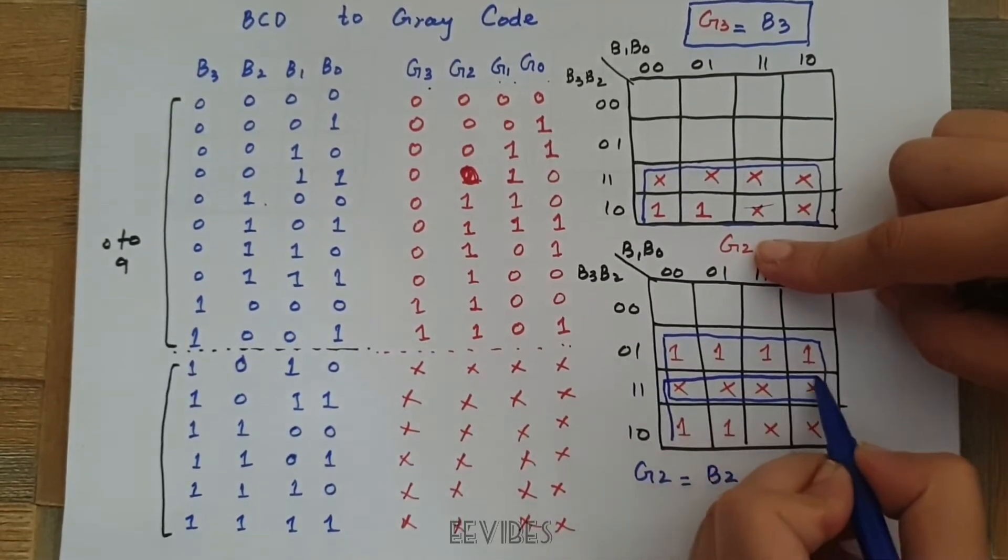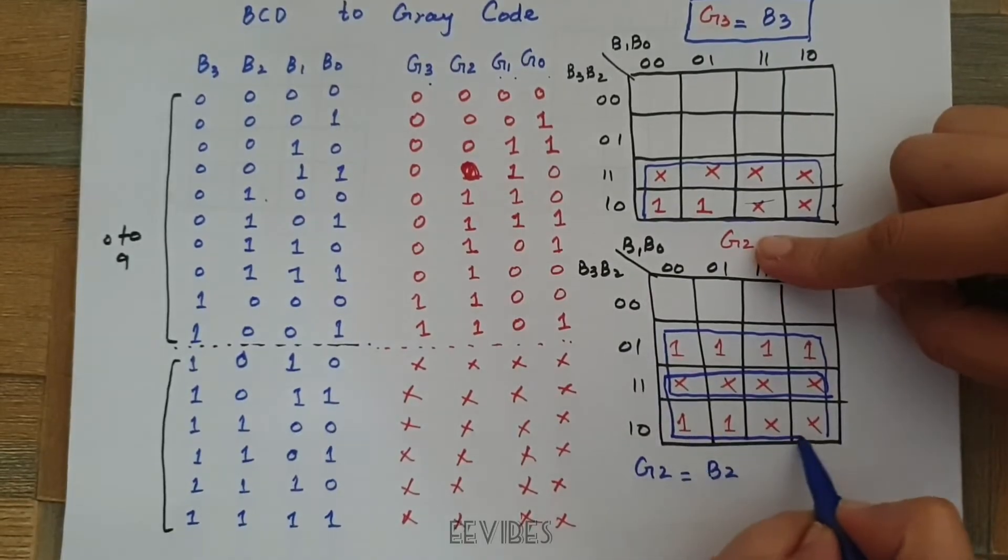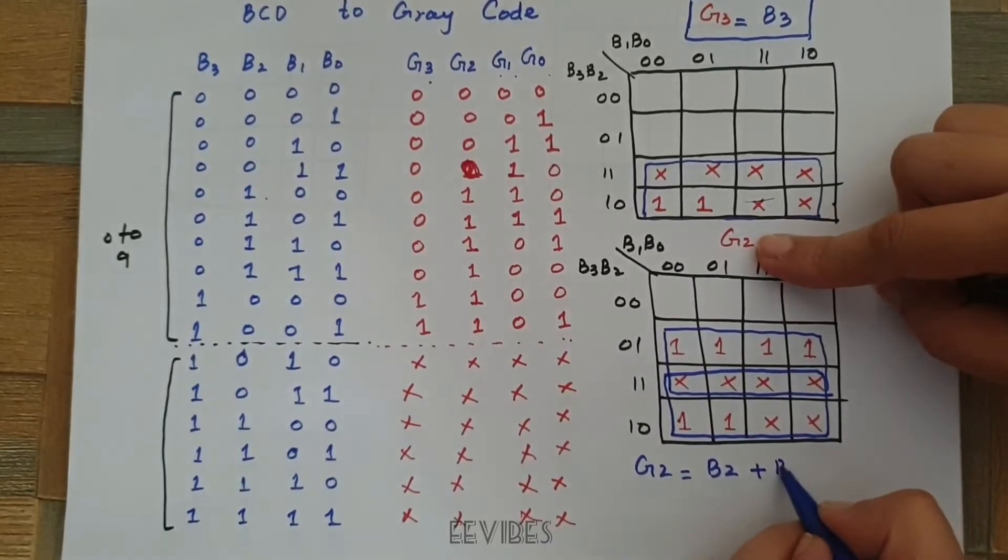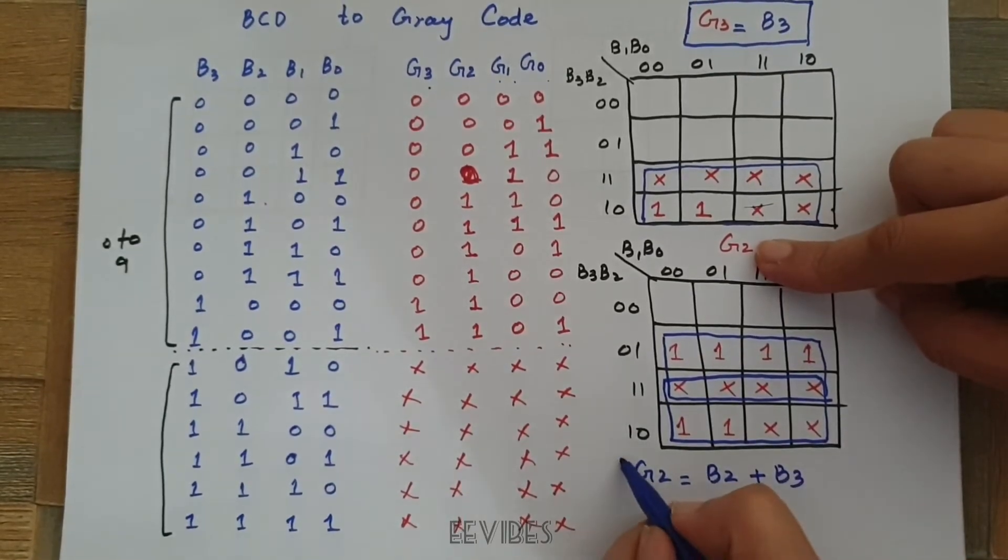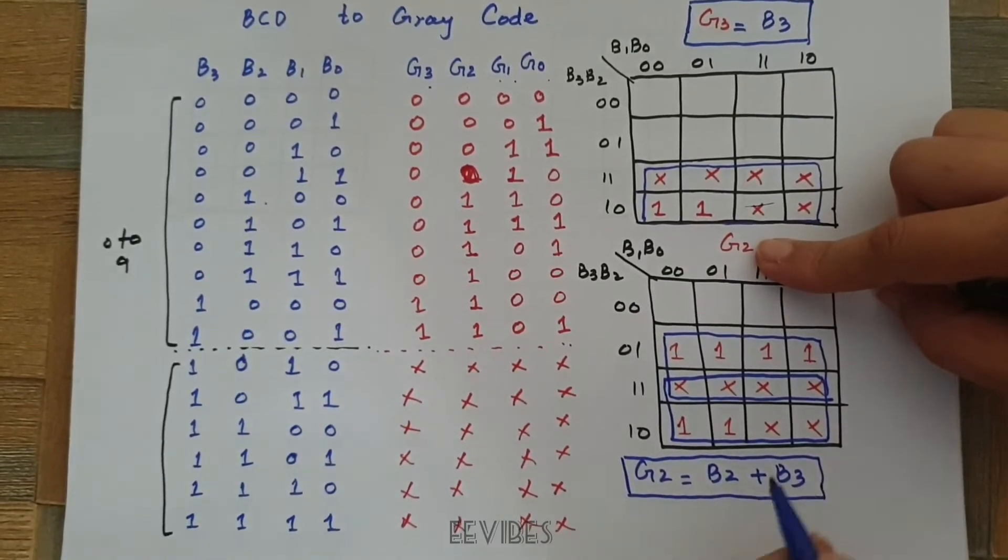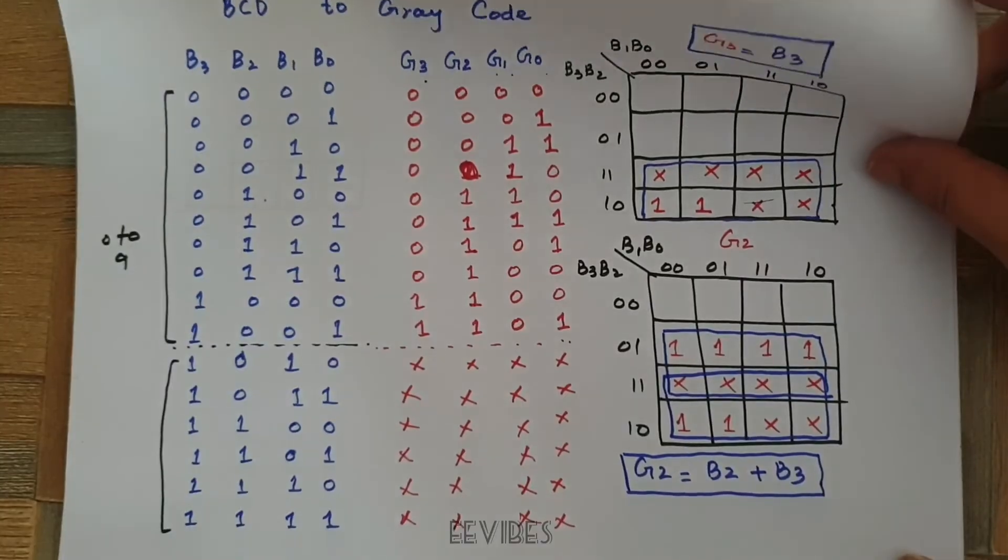Now, let's write the expression for G2. Similarly, I have placed 1 in the boxes where G2 is equal to 1 and in this way, first I will combine these 8 adjacent squares which will give G2 is equal to B2 complement. And then again, you will combine these 8 adjacent squares and hence you will have this is equal to B2 plus B3.